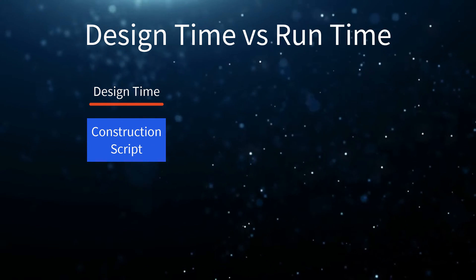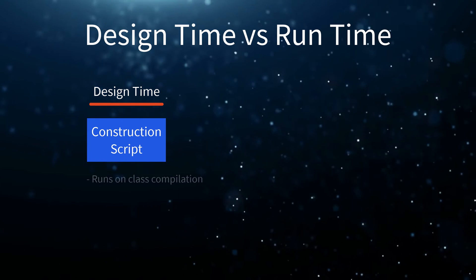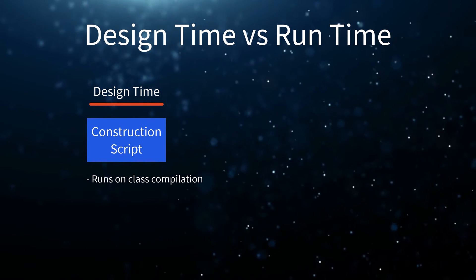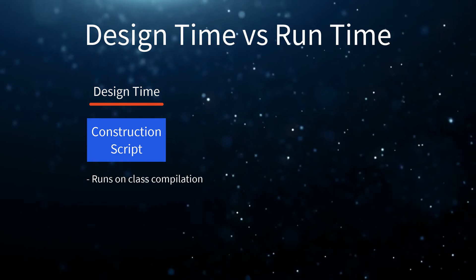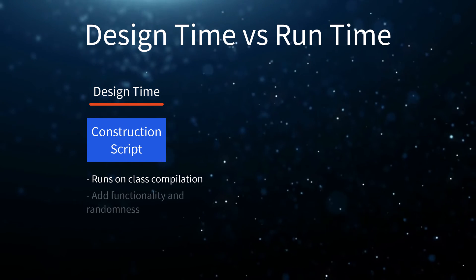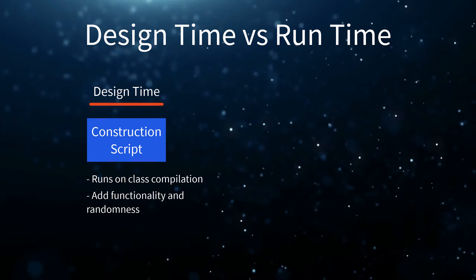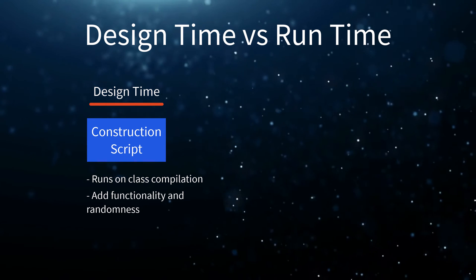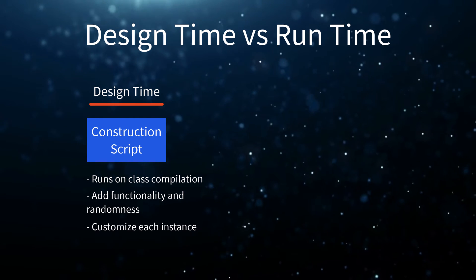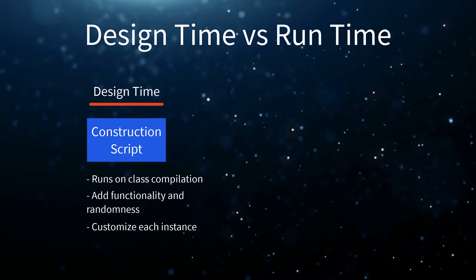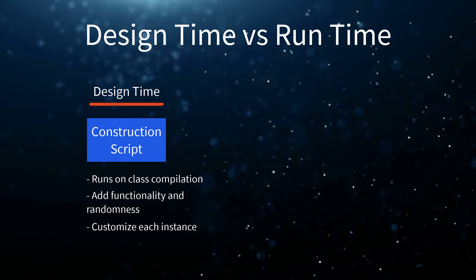As the name implies, Unreal Engine runs the construction script every time it compiles a class. This gives us a lot of flexibility because we can add functionality or randomness inside our construction script to give each instance of a class unique properties. We will take a closer look at the construction script in a later lesson.